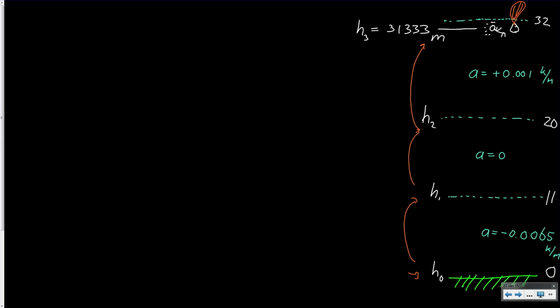So how do we do this? Let's start with the first layer, the troposphere, which starts at 0 kilometers and goes up to 11 kilometers. The gradient there is minus 6.5 Kelvin per kilometer, so in SI units it is minus 0.0065 Kelvin per meter. Let's start by first jumping to 11 kilometers.